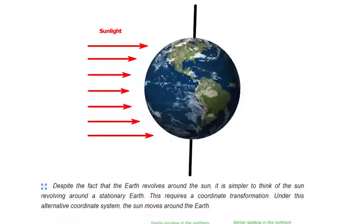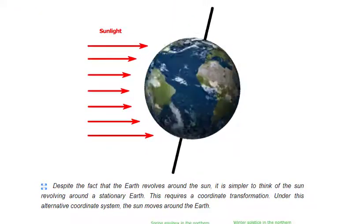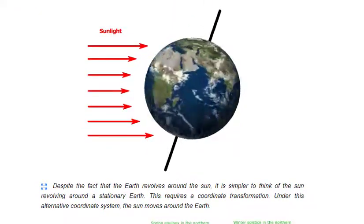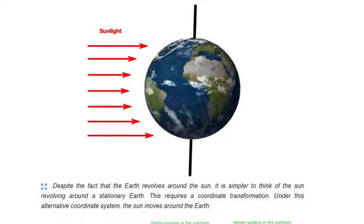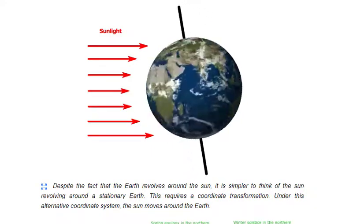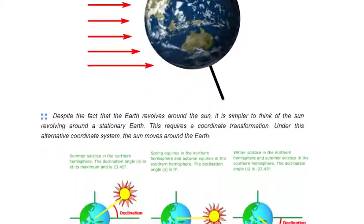Despite the fact that the earth revolves around the sun, it is simpler to think of the sun revolving around a stationary earth. This requires a coordinate transformation. Under this alternative coordinate system, the sun moves around the earth.